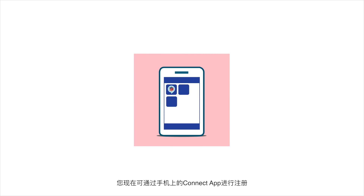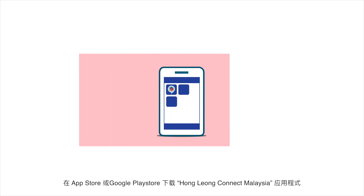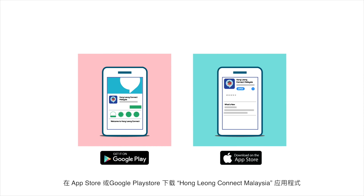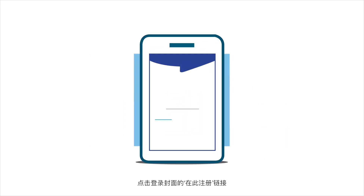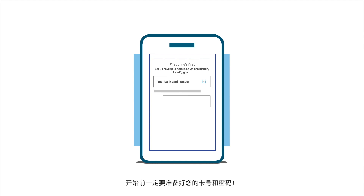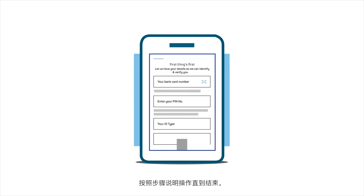You can now register through the Connect app on your phone. Download Hongliang Connect Malaysia app from the App Store or Google Play Store. Launch the app. Click on the Register Here link at the pre-login page. Be sure to have your card number and PIN ready before you start. Follow the step-by-step instructions to the end.